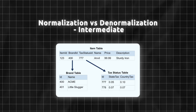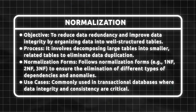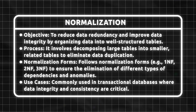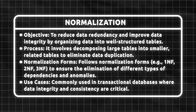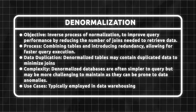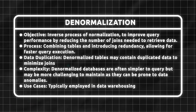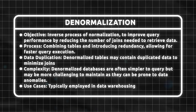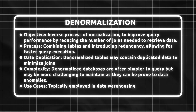Explain normalization versus denormalization. Normalization is a data modeling technique to reduce data redundancy by decomposing large tables into smaller related tables to eliminate data duplication. It has various normalization forms like 1NF, 2NF, 3NF. Denormalization is the inverse process of normalization to improve query performance by reducing the number of joins needed. It allows faster query execution but tables may contain duplicated data to minimize joins.